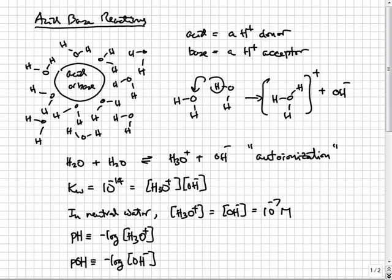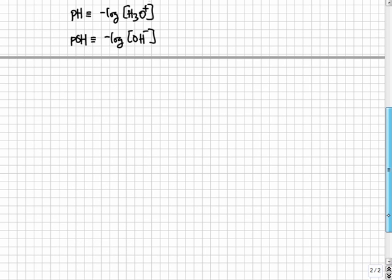Sometimes you see the auto-ionization reaction written this way, H2O going to H+ and OH-. This must be understood as a shorthand for the reaction above, because every acid-base reaction must have two reactants, an acid and a base. We will avoid writing the auto-ionization this way, and will always try to use H3O+ instead of H+.